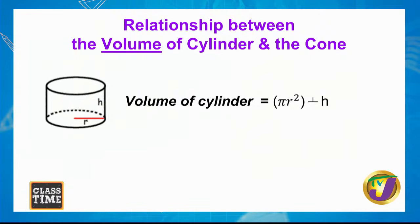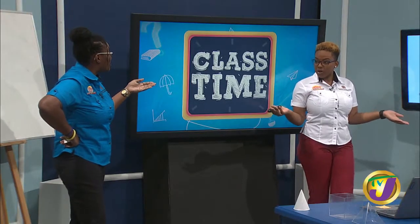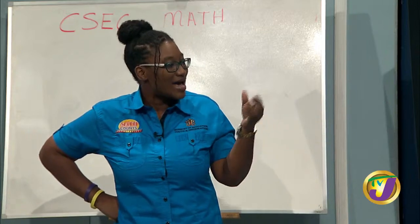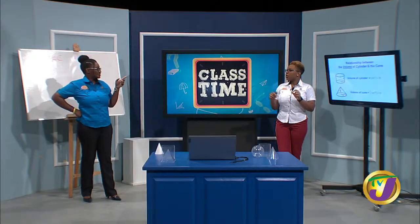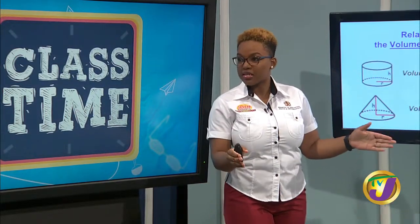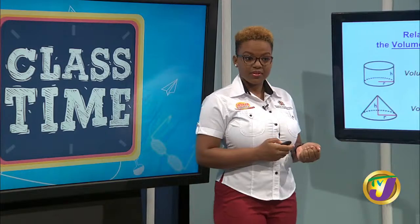Since it took three cones to fill one cylinder, we can use one-third of the volume of the cylinder to determine the volume of the cone. One third means dividing into three equal parts — one of those thirds is equivalent to one cone's volume. So if we were to share the water in the cylinder into three equal parts, each part would be the volume of one cone.